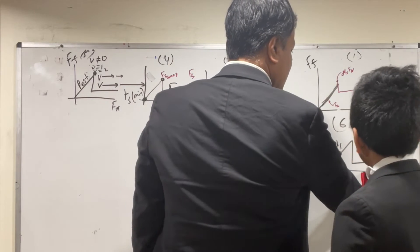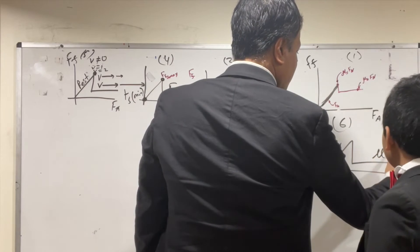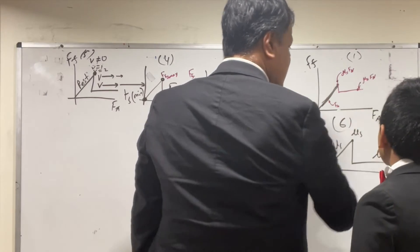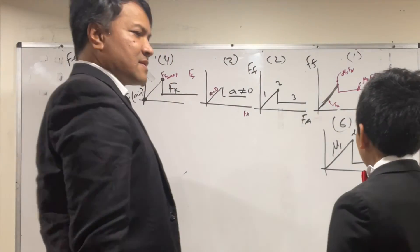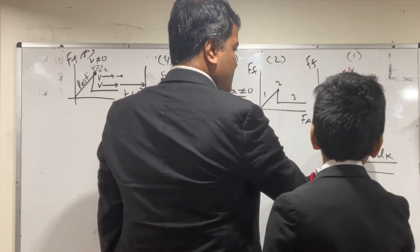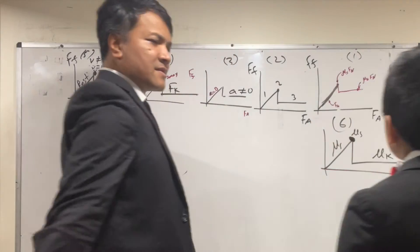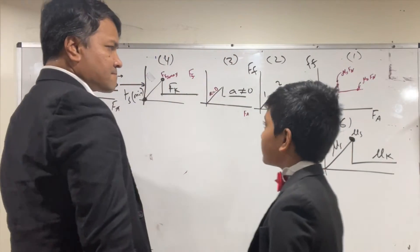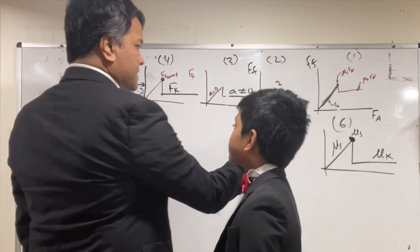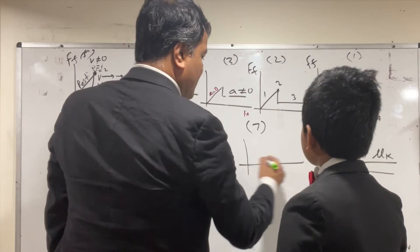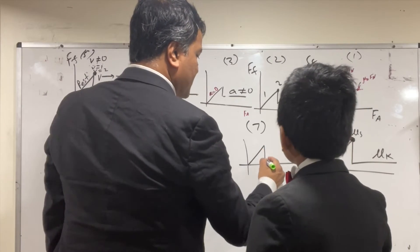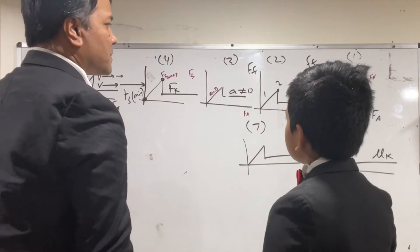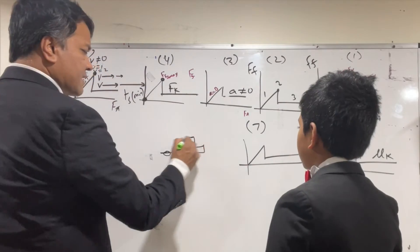This is mu_s, and this is also mu_s right here. That's graph number six. Now let's do graph number seven and see whether we can figure it out with more information.